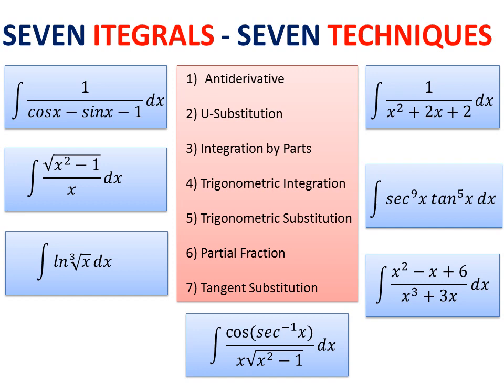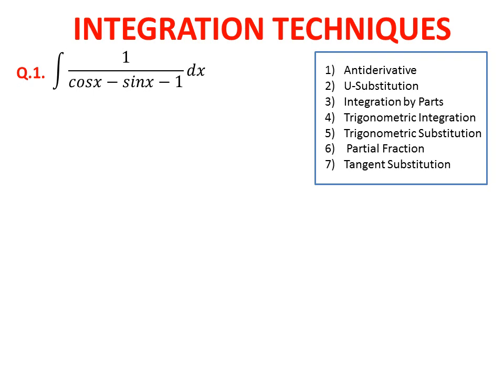The first question is the integral of one over (cos x minus sin x minus one). We need to understand which technique is suitable. Anti-derivative — we don't know it. Substitution will not work. Integration by parts will not work. Trigonometric integration — it has a trigonometric expression, but in trigonometric integration we only care about products of trigonometric functions. Partial fraction — no. So the seventh technique, tangent substitution, will work here.